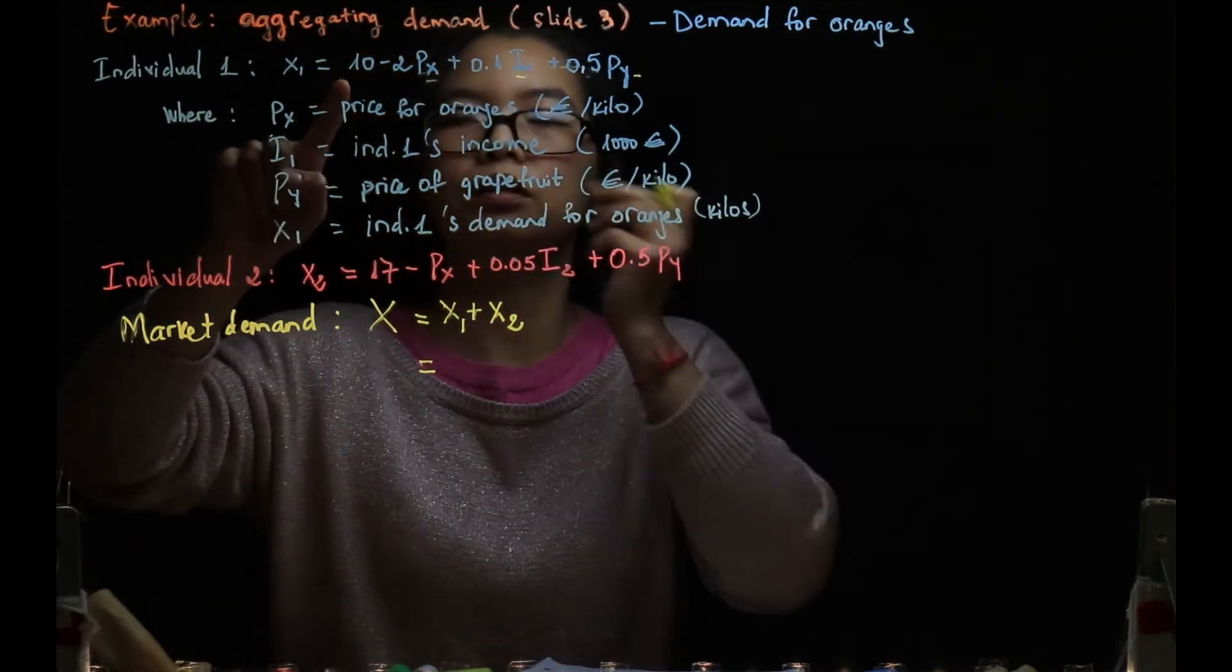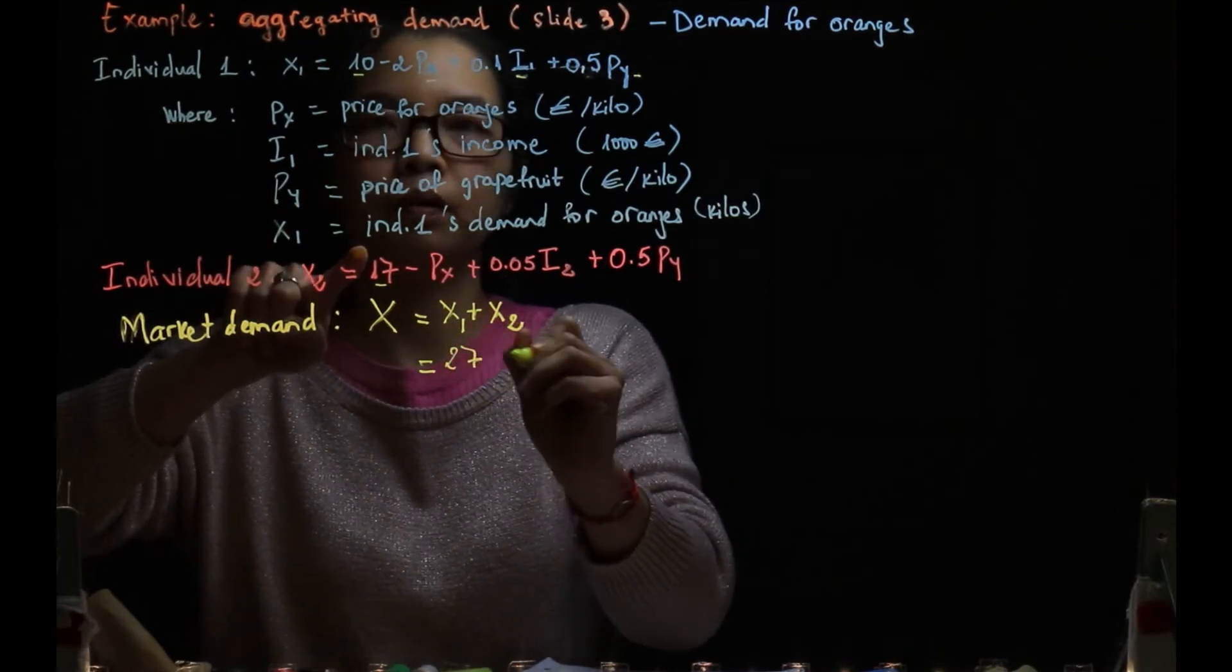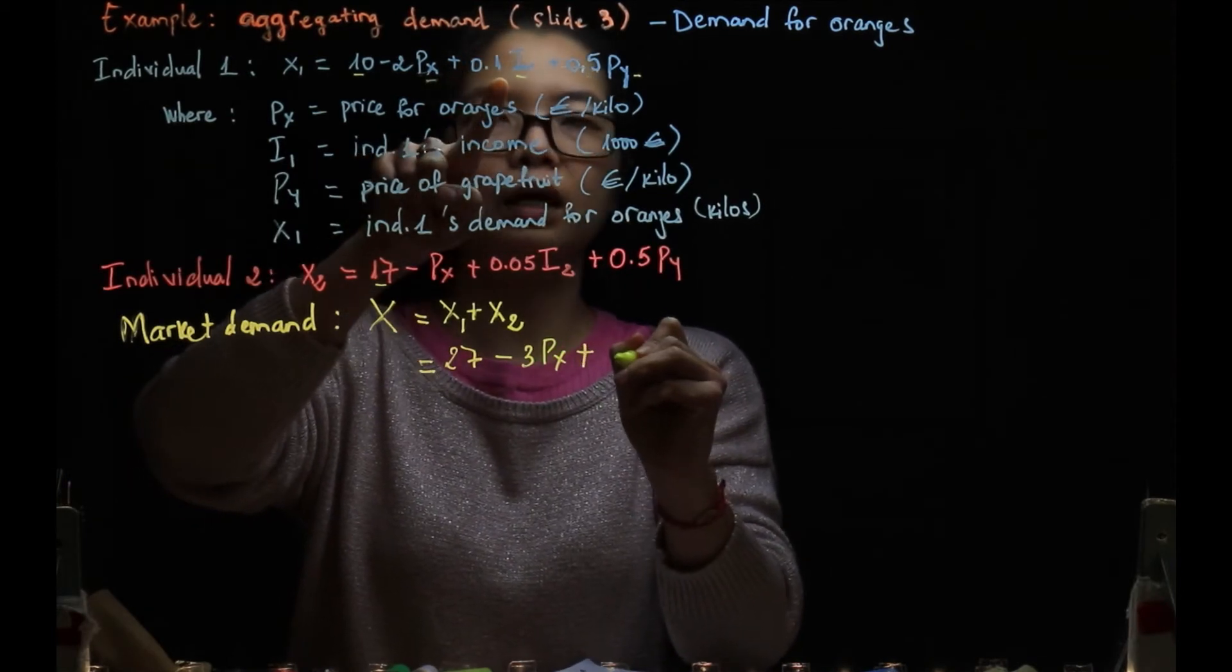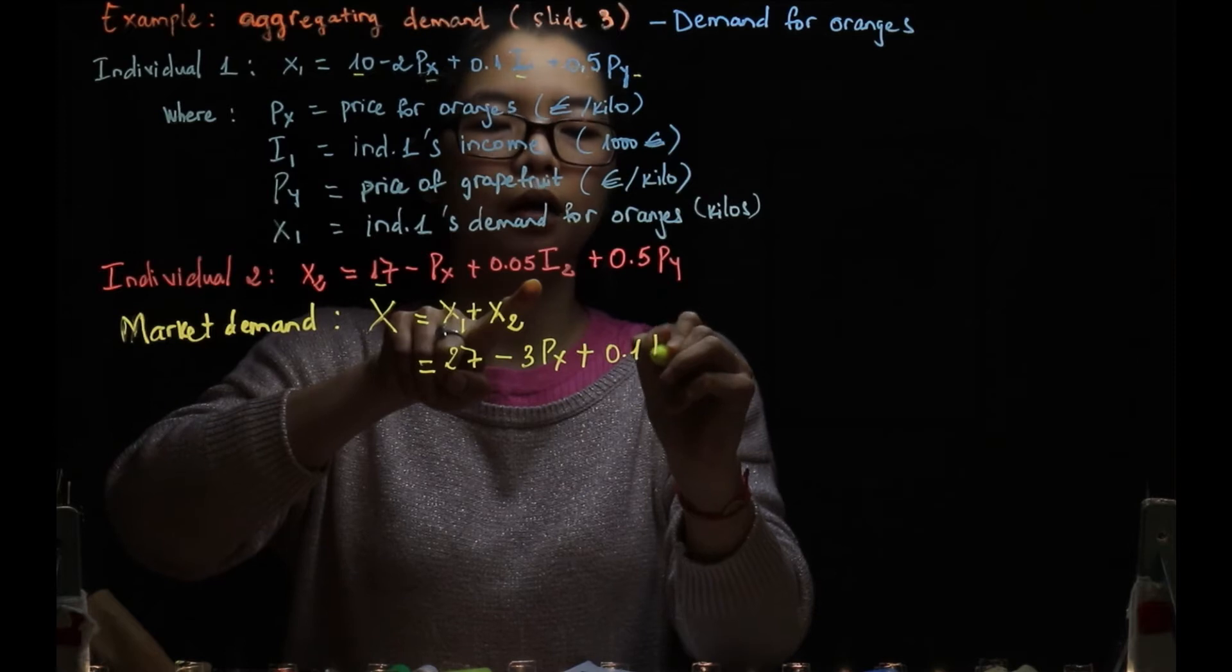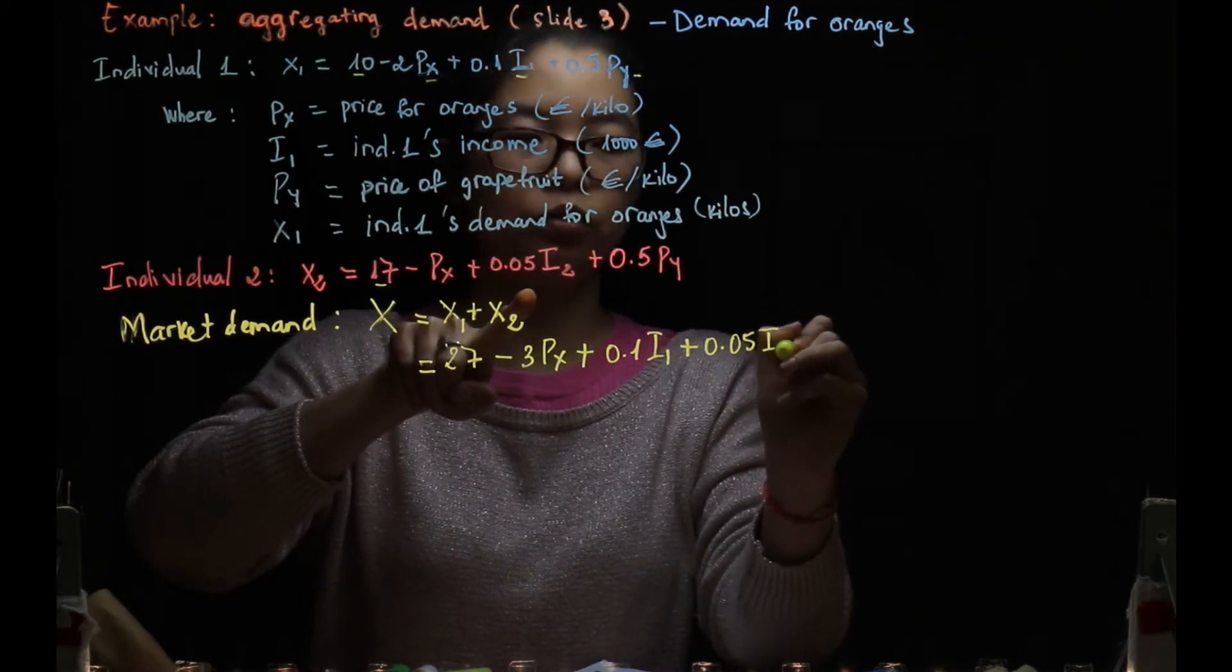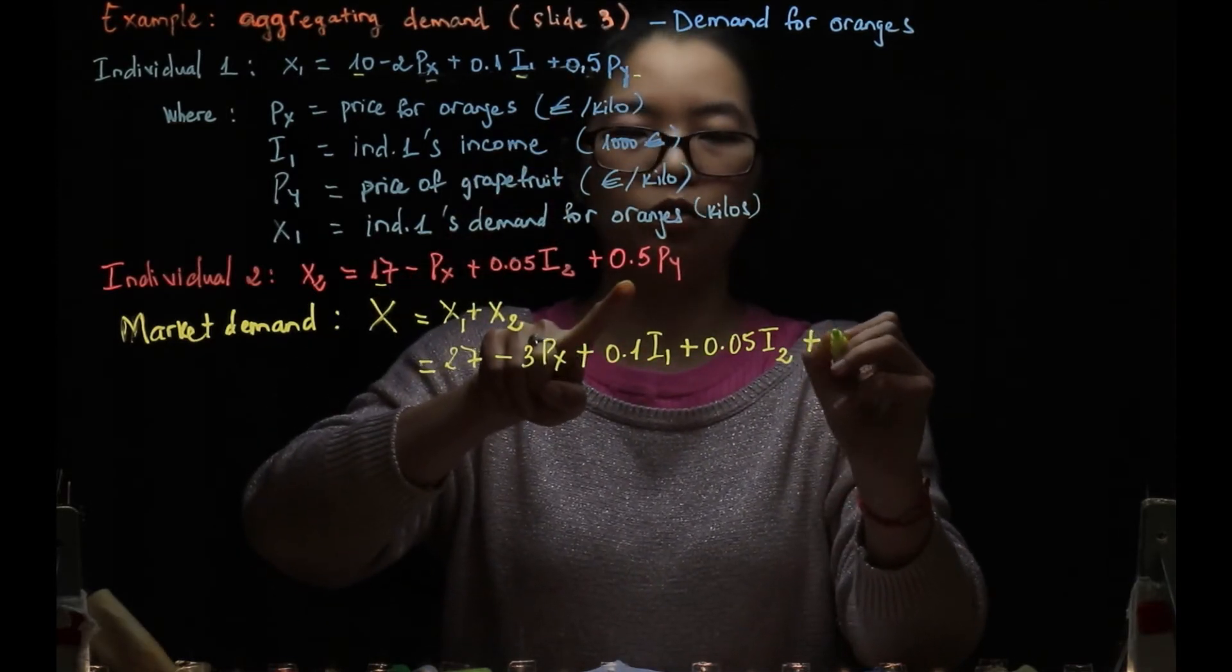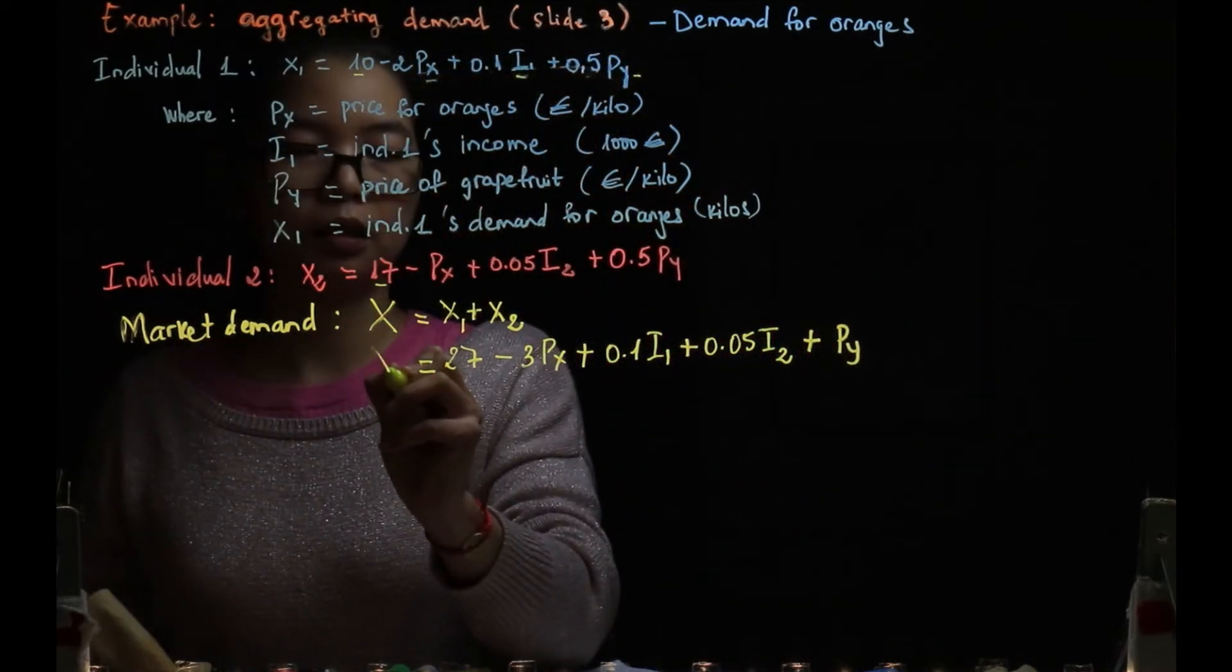Let's do it step by step: 10 plus 17 so 27, minus 2px here minus another px the same px minus 3px, plus 0.1 I1. There's no other I1 so rewrite it. And then plus another 0.05 I2. So we sum this up like I said on the slide. Plus 0.5 py here, there's another 0.5 py, so that equals 1 py. This is the market demand for oranges.